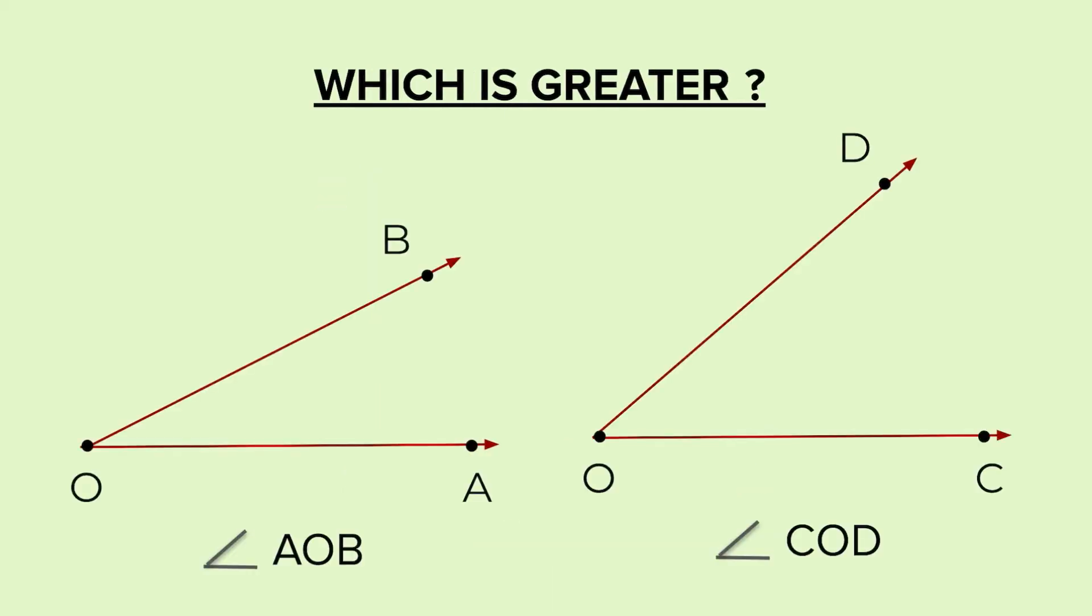Now which is greater? Looking at these two angles, you can tell which angle is greater. Angle AOB is smaller and angle COD is greater than that. Now if I ask you by how much is this angle greater, it is difficult to just tell by seeing. So we need to measure it.